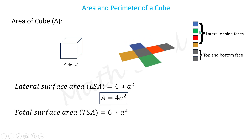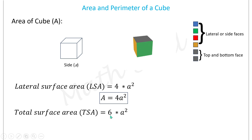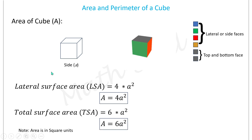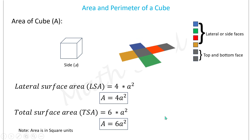Similarly, total surface area is inclusive of the area of all six faces, which are all squares. Therefore, the total surface area of a cube is equal to 6 times a squared, that is, TSA = 6a². The area of a cube is expressed in square units.